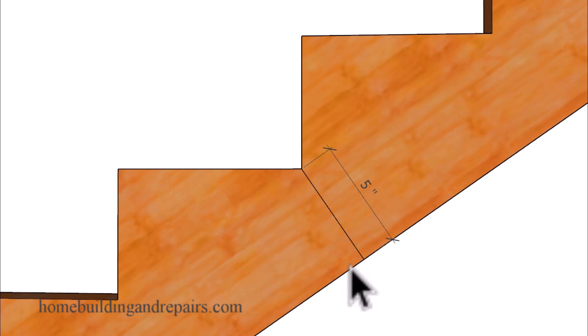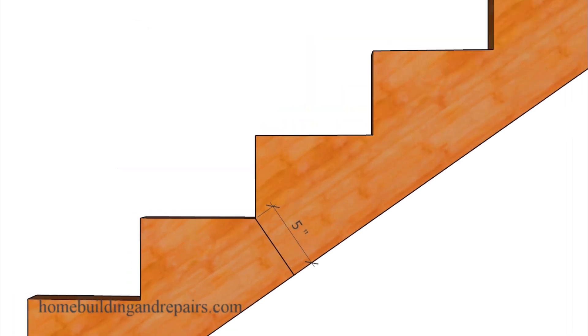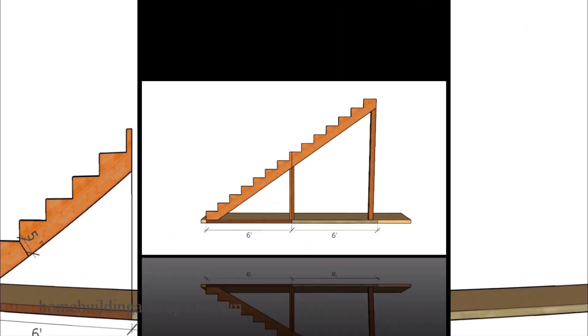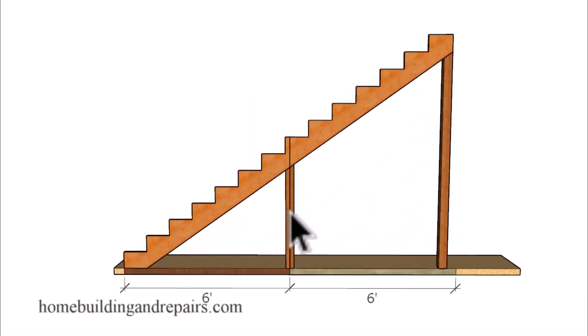The American Wood Council also suggests using a minimum of 2 by 12 for your stair stringers. So what if you need them to be longer? Then you will need a post supporting the stringer.